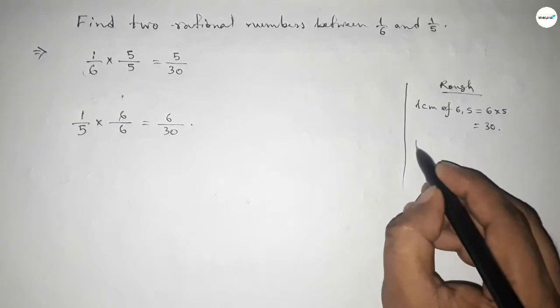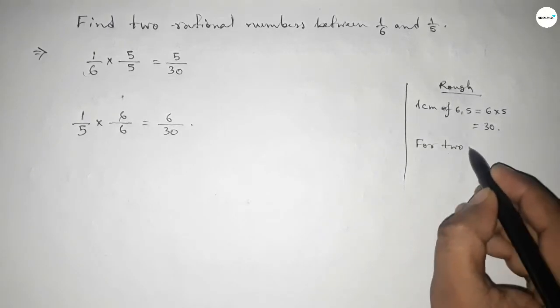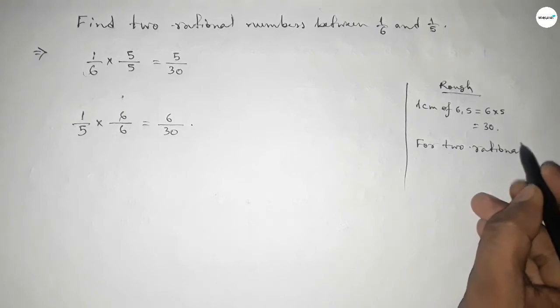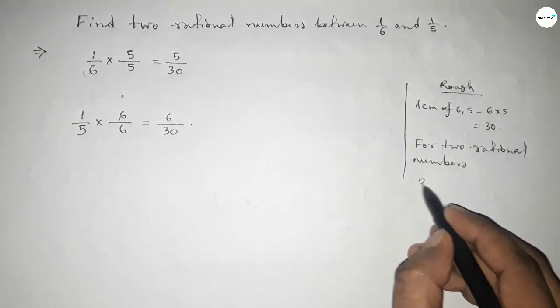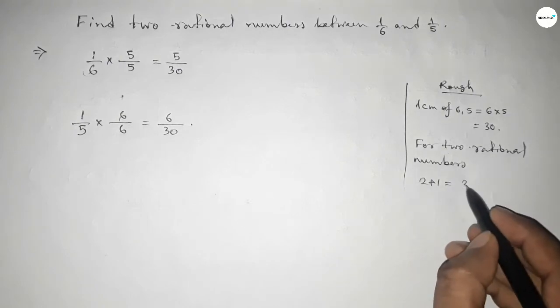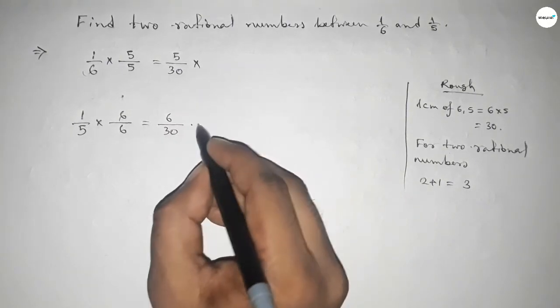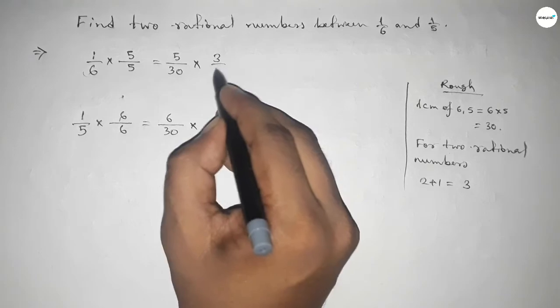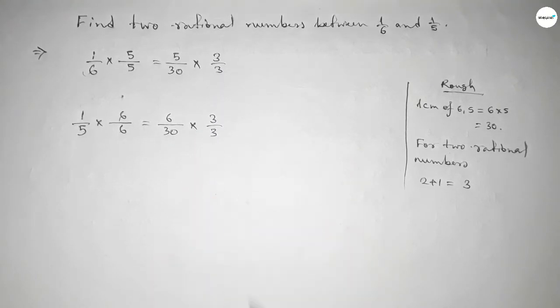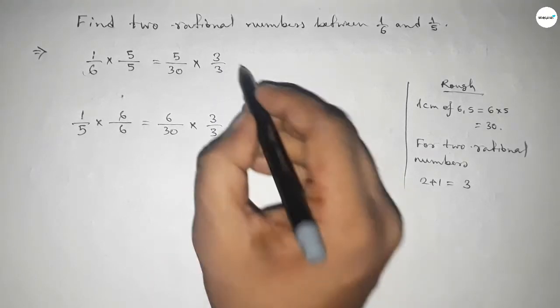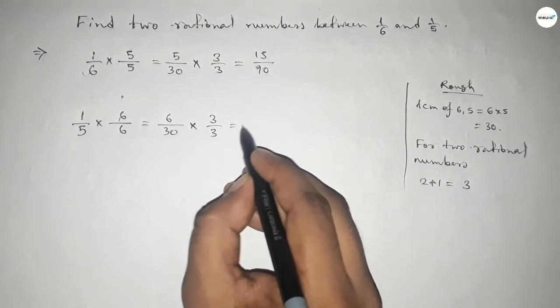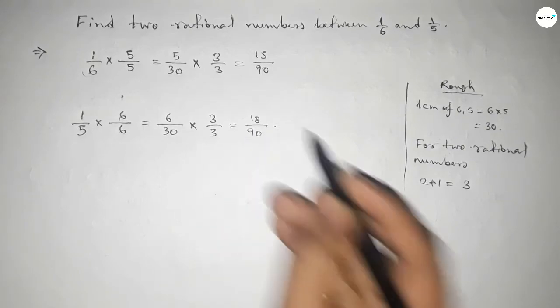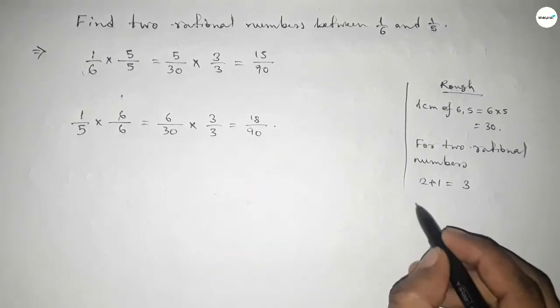Now, for two rational numbers between any two numbers, we follow this method: multiply both fractions up and down by 2+1=3. So multiplying both by 3, we get 15/90 and 18/90.